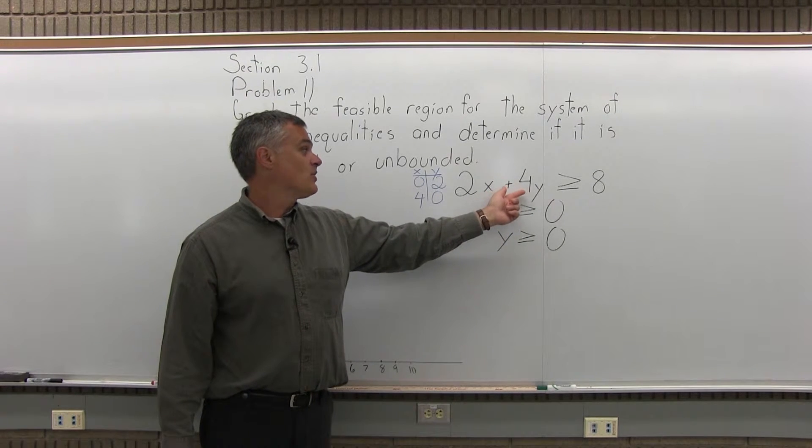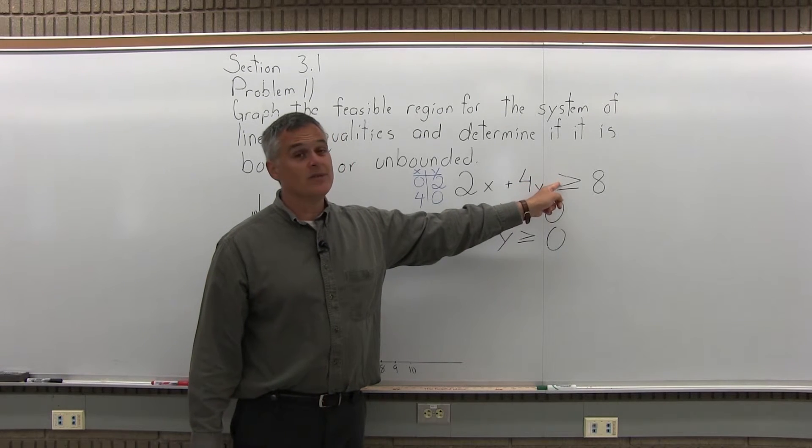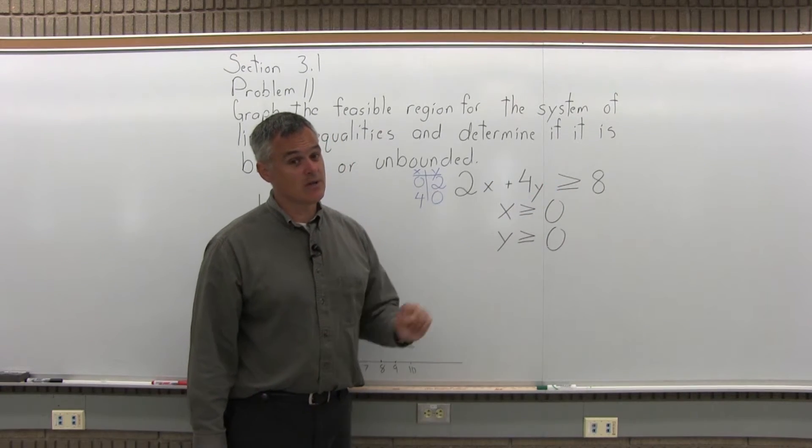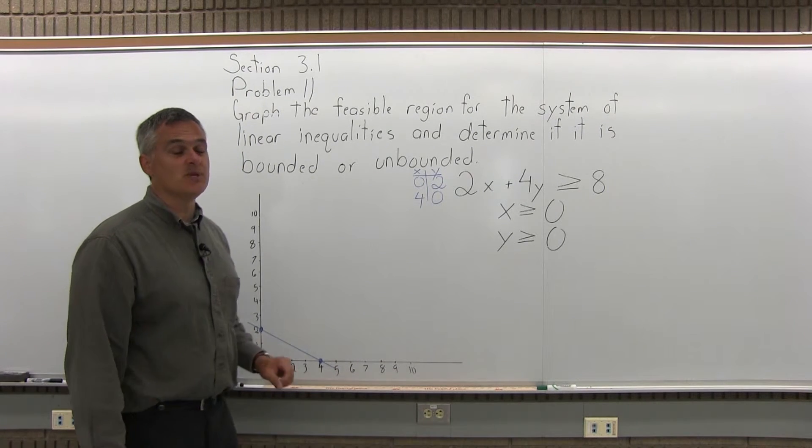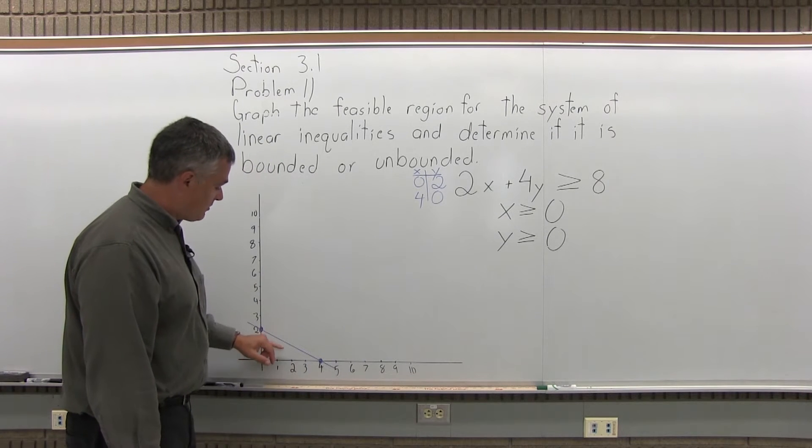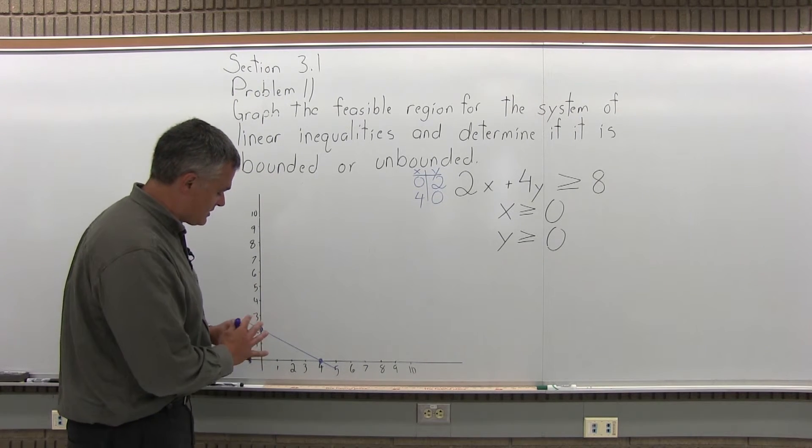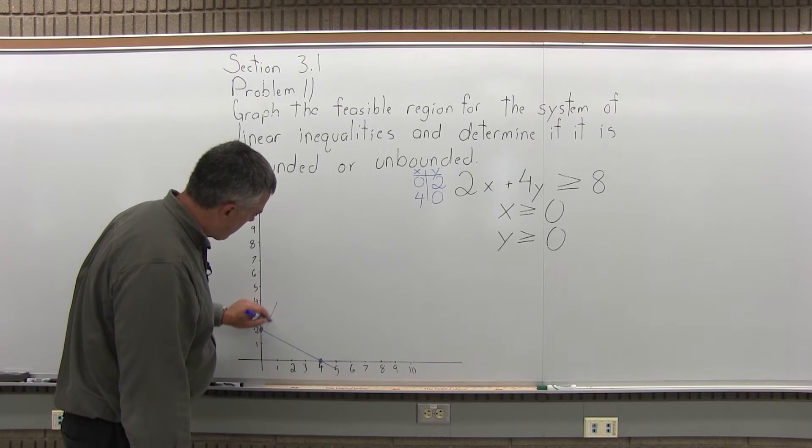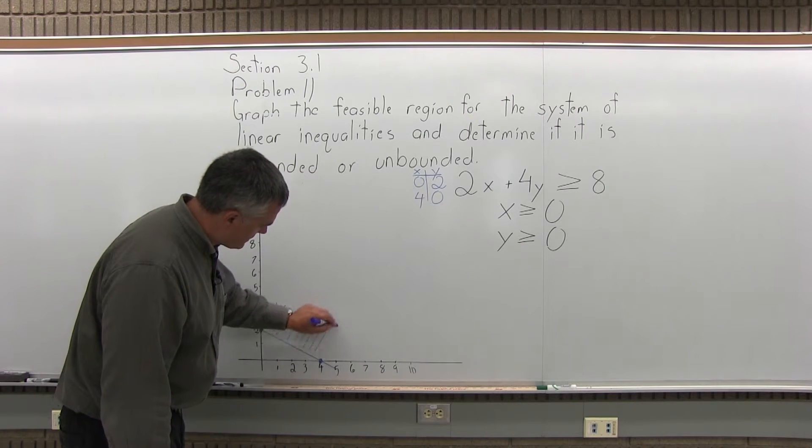If I substitute 0 for x and 0 for y, I have the statement 0 is greater than 8. Well, that's not true. 0 is not greater than 8. So my test point was on the underneath side. The result it gave me is false. So the other side must be shaded. This is the blank side. The other side, the up above side, is the shaded side. That's the first linear inequality.